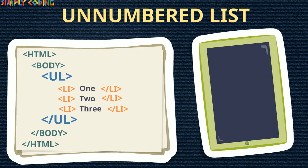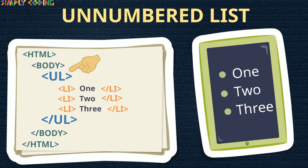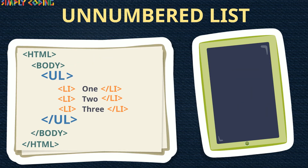Let's see this in an example. In this first example, we have not specified any attribute. So by default, disk is being displayed.